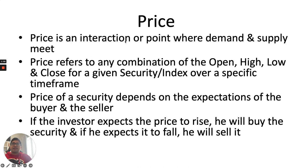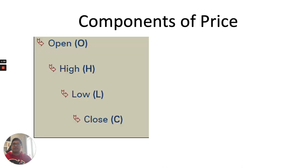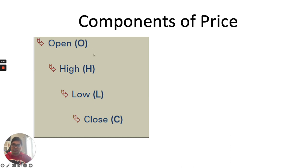Price is an interaction or a point where demand and supply meet. Price refers to any combination of open, high, low or close for a given security or an index over a specific time frame. Price of a security depends on expectations of buyers and sellers — if the investor expects the price to rise he will buy the security, if he expects the price to fall he will sell it. When you look at price in technical analysis, you view it in four data points: open, high, low and close in a given time frame.